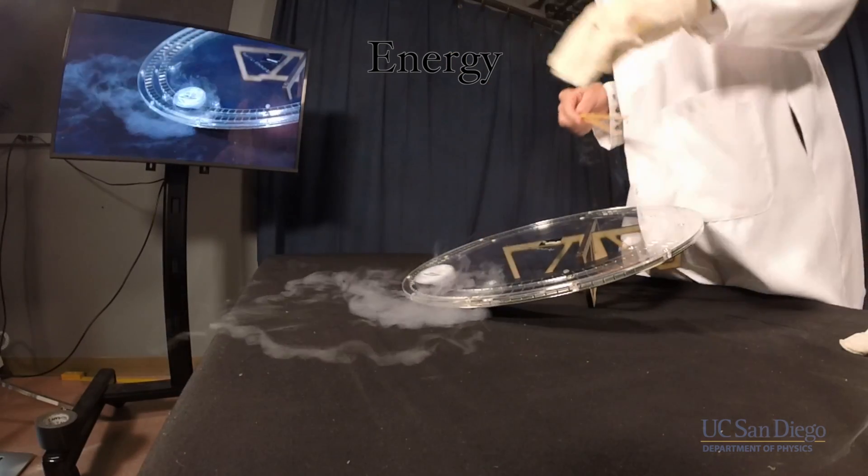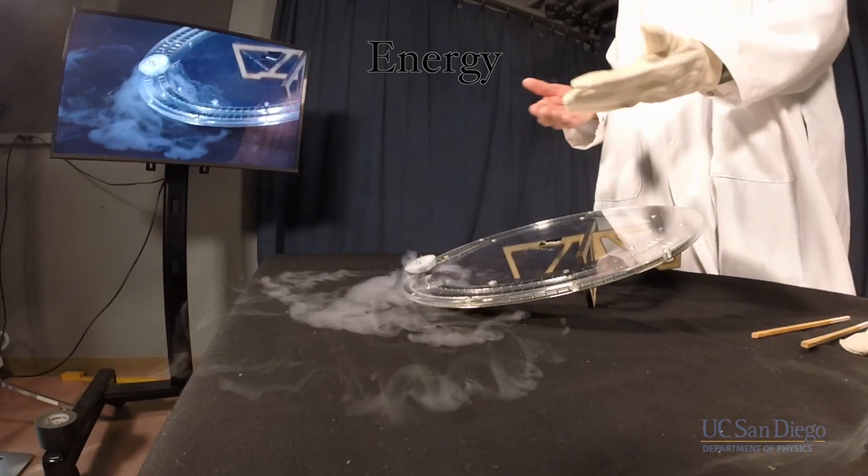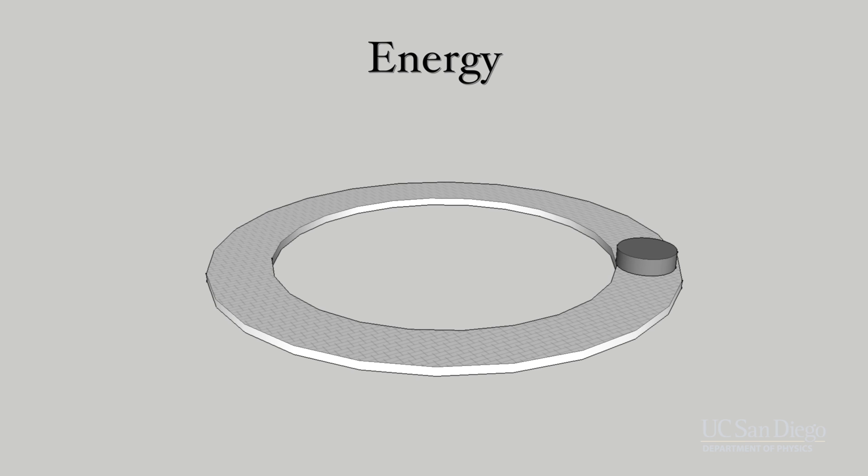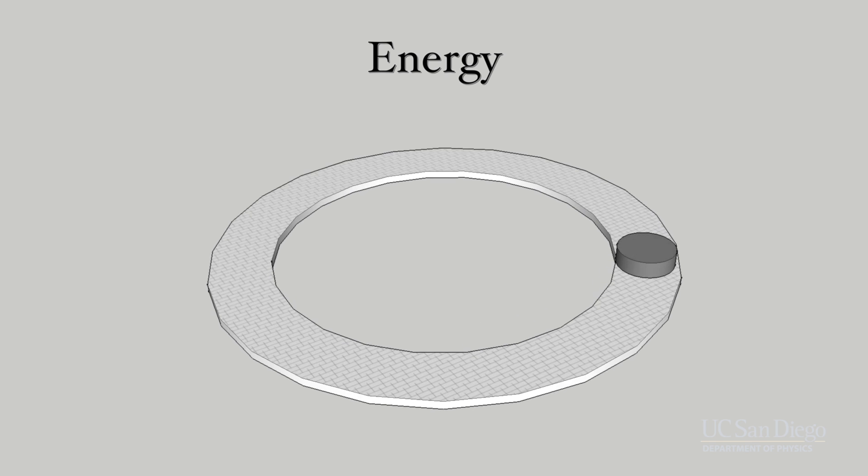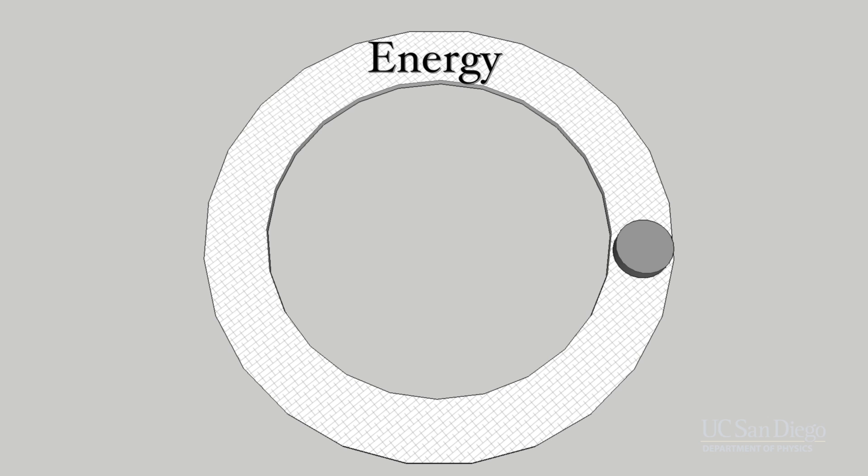We can neglect any air resistance in this case, and since we have no contact between the superconductor and the track, we have no frictional resistance. That means we can consider total mechanical energy in this system to be conserved. That's composed of both kinetic energy and potential energy.